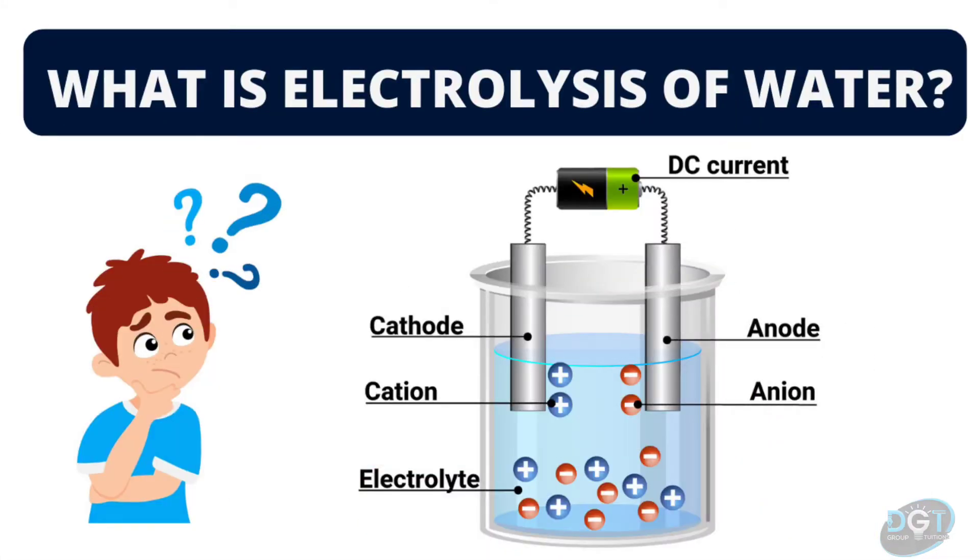As far as electrolysis of water is concerned, it is the process of using electricity to split water into hydrogen and oxygen separately. This reaction takes place in a unit called an electrolyzer.